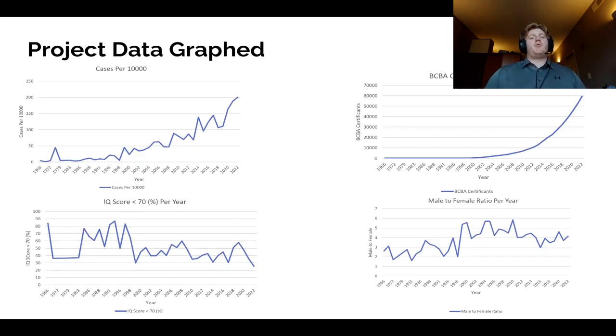So here is my project data graphed. We can see some trends just looking at the data. With cases per 10,000, we have a slight linear increasing trend. And then we have an exponential in BCBA. And then we have a slight negative trend in the IQ. And a slight positive trend in male to female.